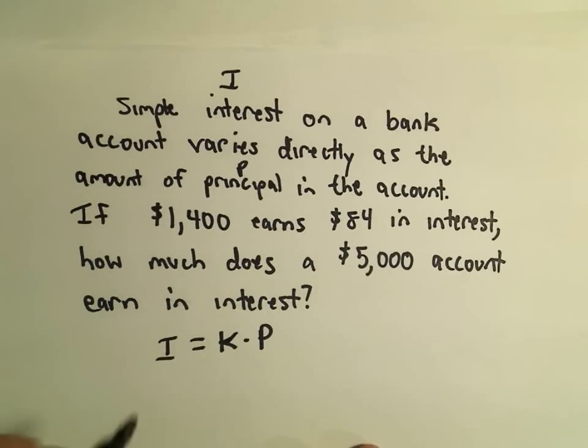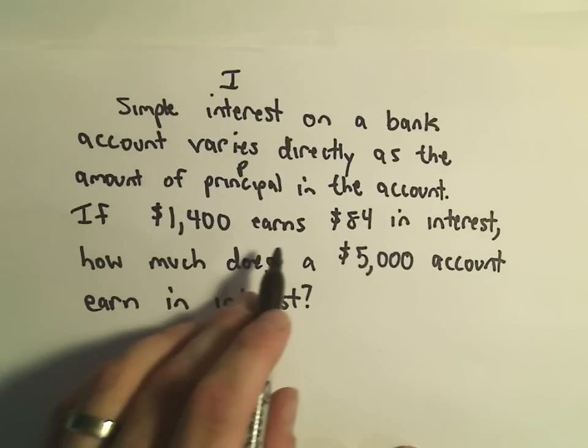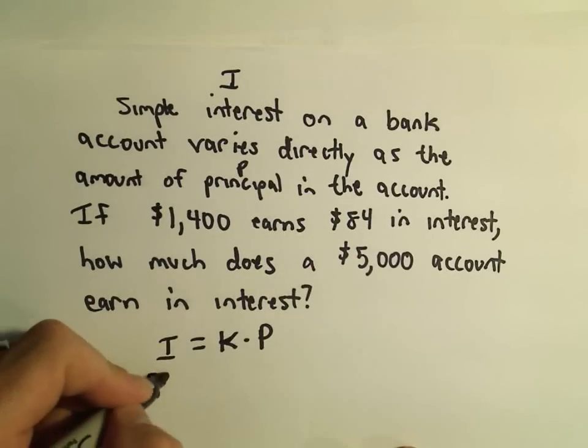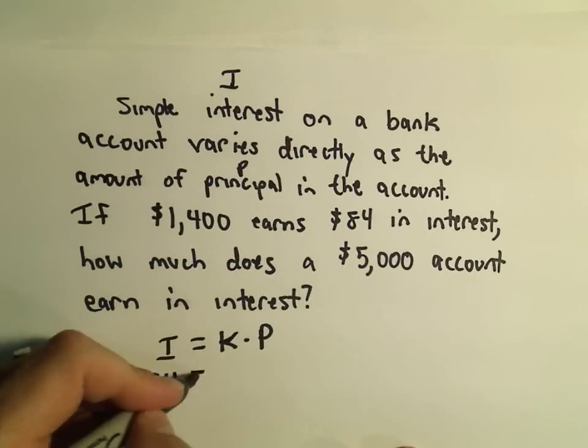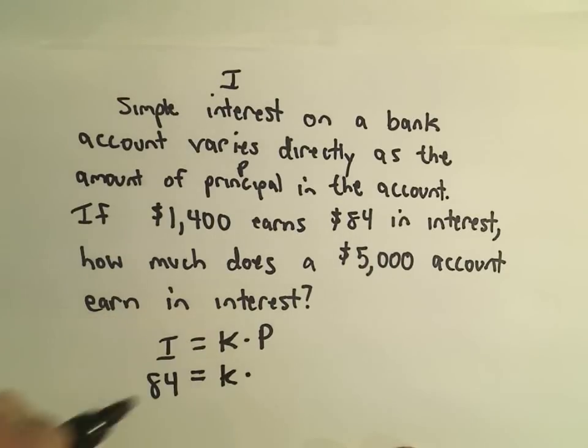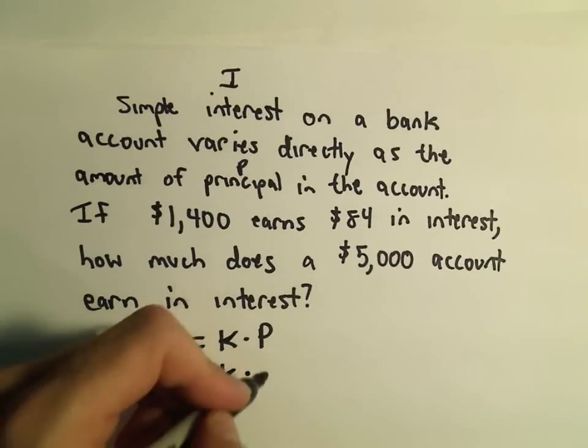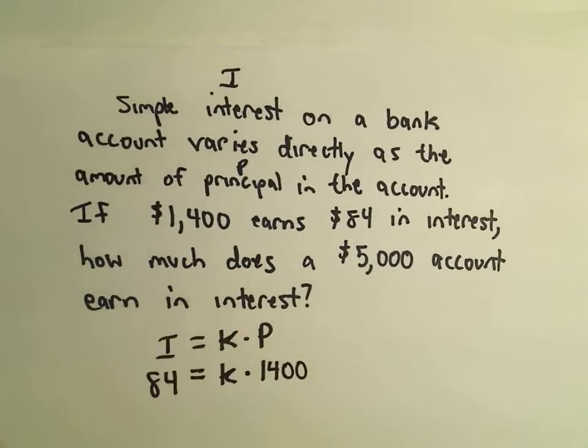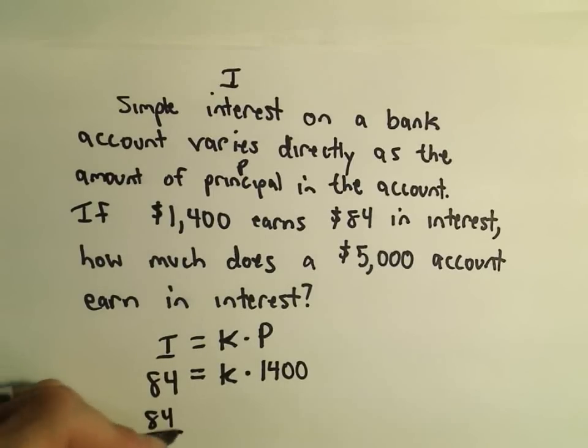So the first thing we're going to do is solve for K. So the interest is $84, I'm going to plug that on the left. K is what we're trying to solve for. And that was on an initial principal of $1400. So to solve for K, I'll divide both sides by $1400.